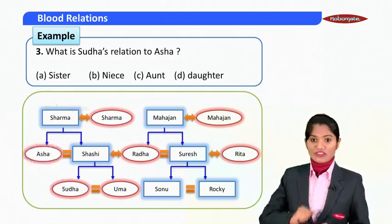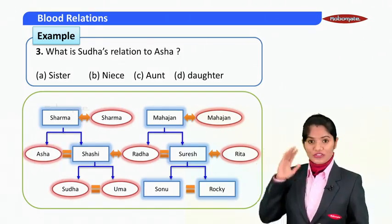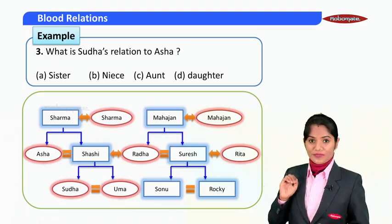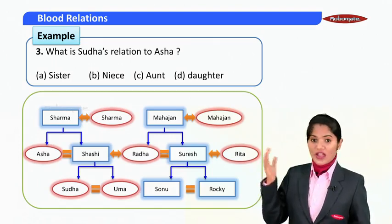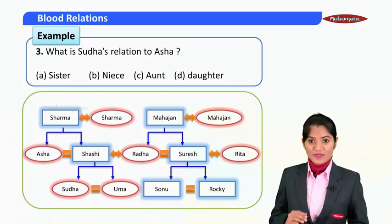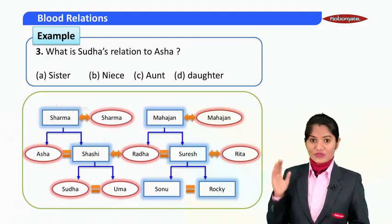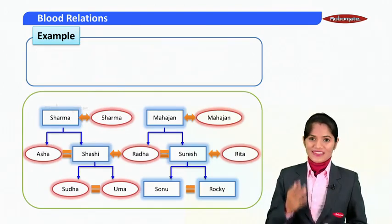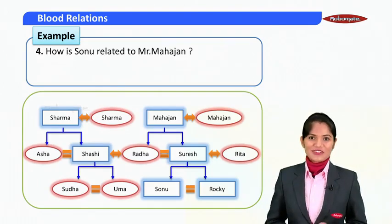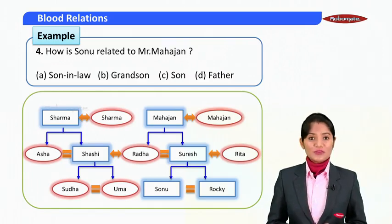Very good. Next question: what is Sudha's relation to Asha? We have to find the relation between Sudha and Asha. Sudha is the daughter of Shashi, and Shashi is the brother of Asha. By this relation, Sudha is the niece of Asha.